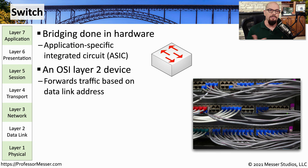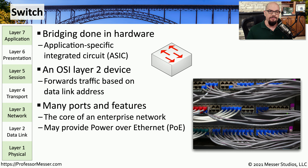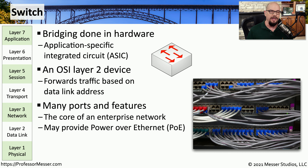Our modern switches make forwarding decisions based on the MAC address, so these are OSI Layer 2 devices. Another significant difference from traditional bridges is that we can have tens or even hundreds of interfaces on our switches. It's common to see these switches not only in the core of our networks, but at the edges as well.